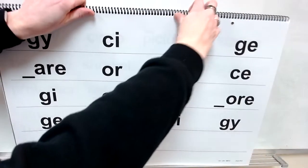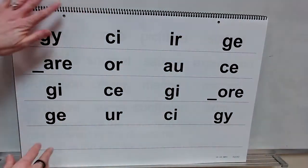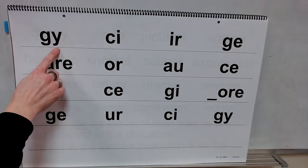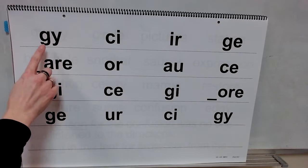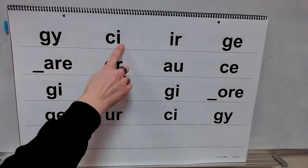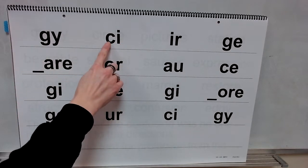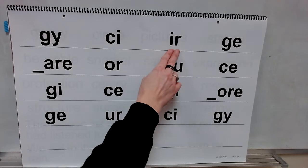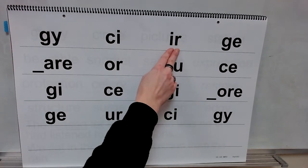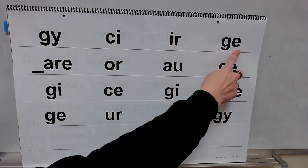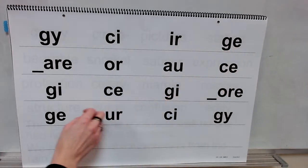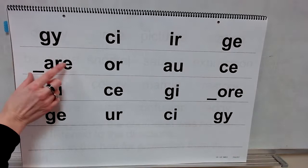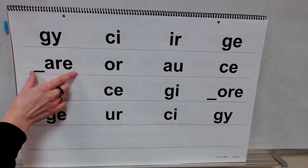Now let's review these sound spellings. Look at the Y. Sound: yes. With this I here. Sound: yes. Sound: er. With the E here. Sound: J. With the consonant here.